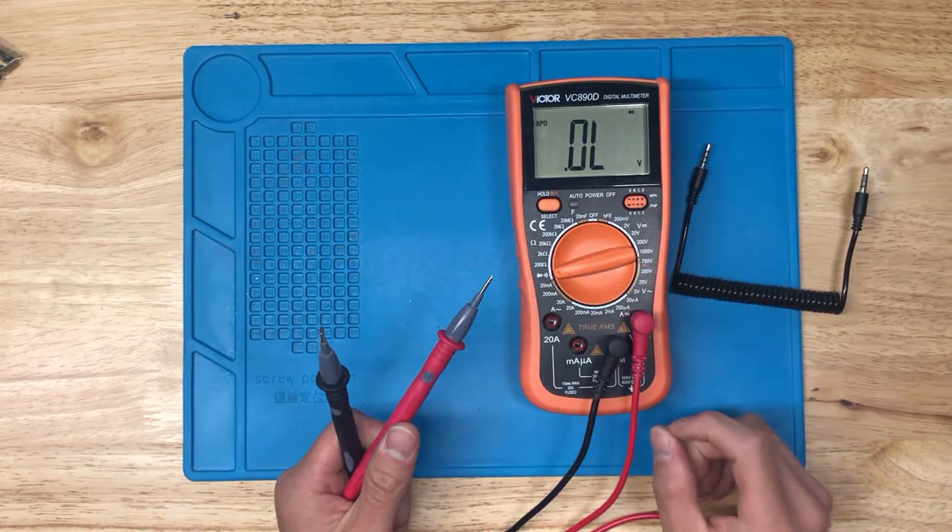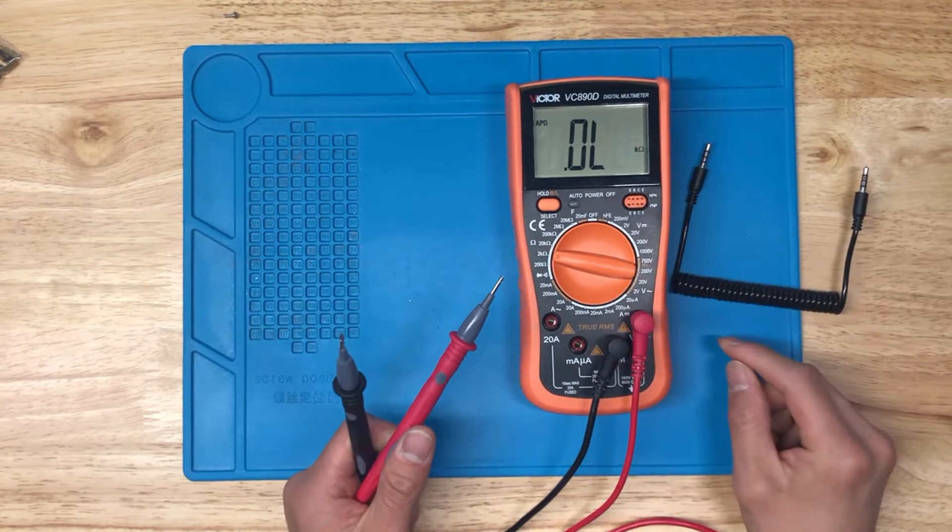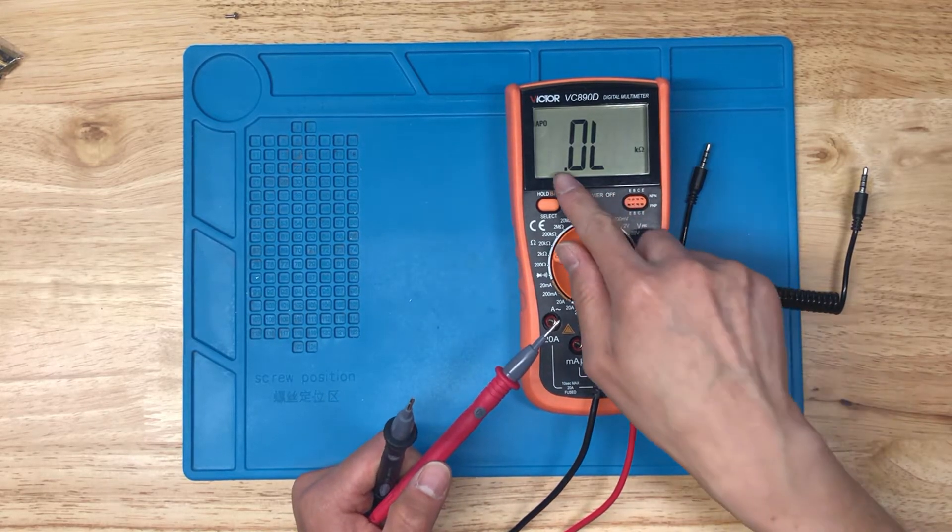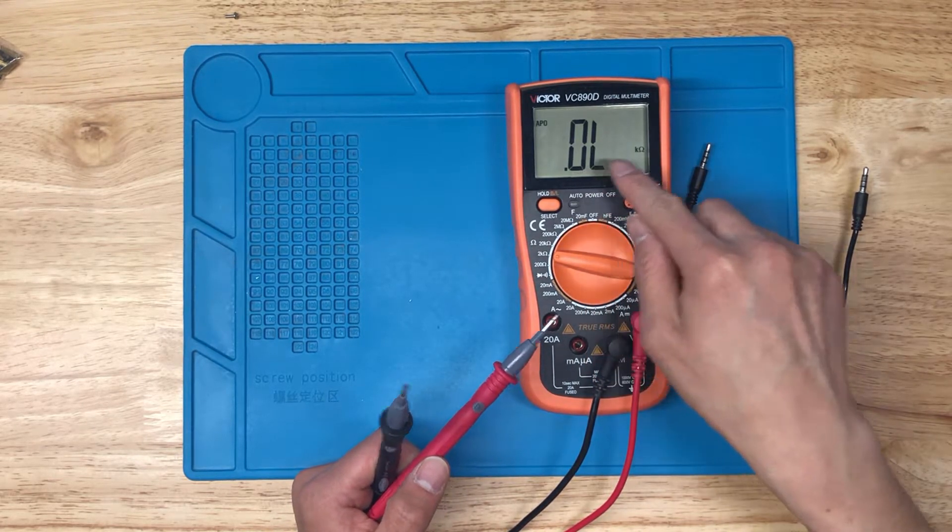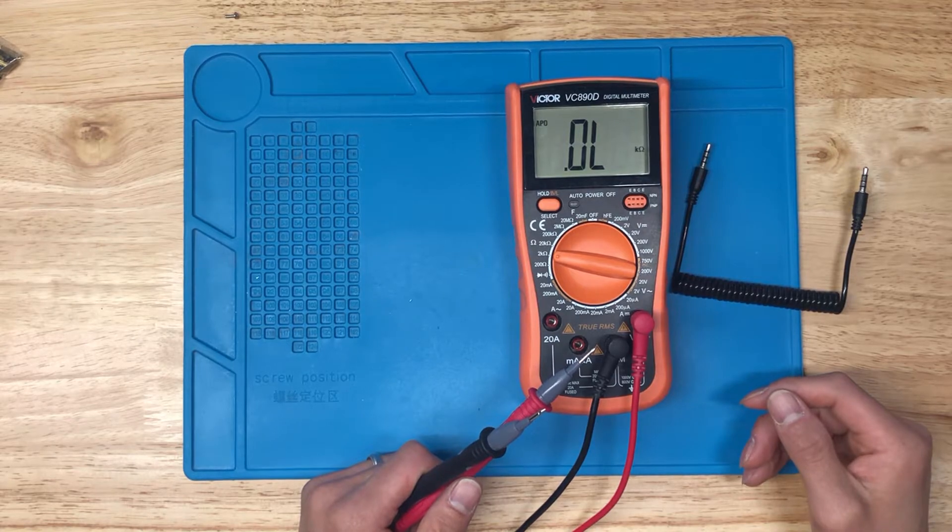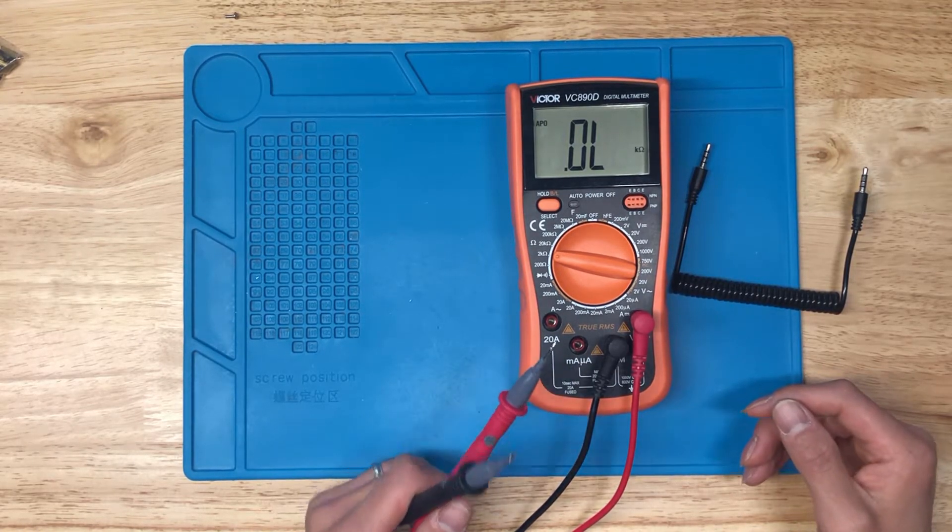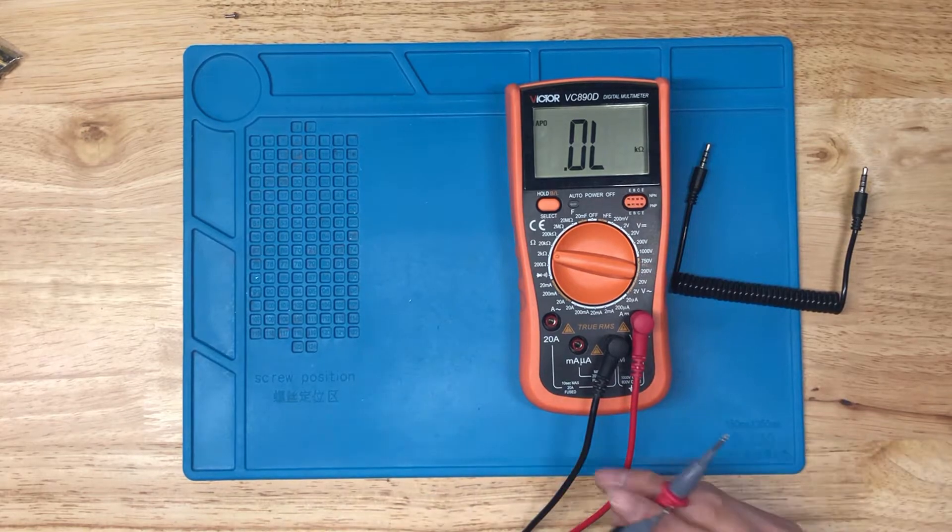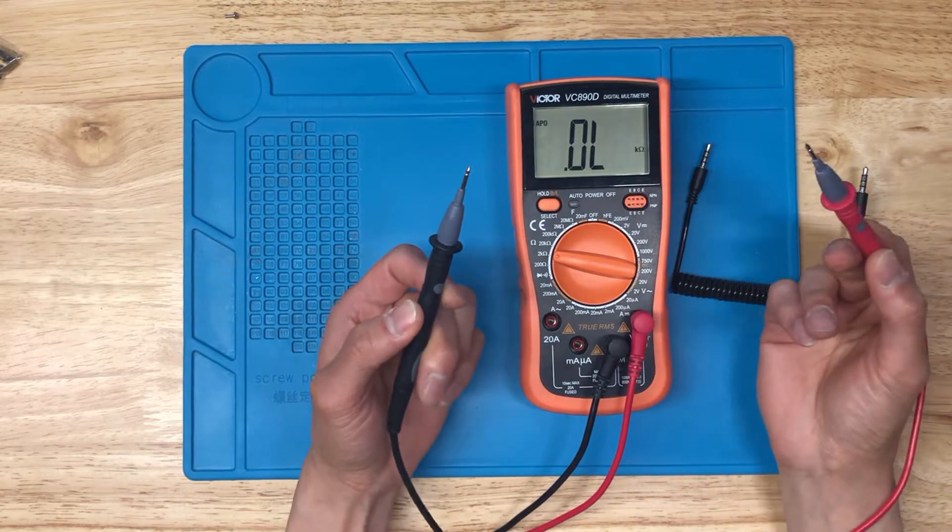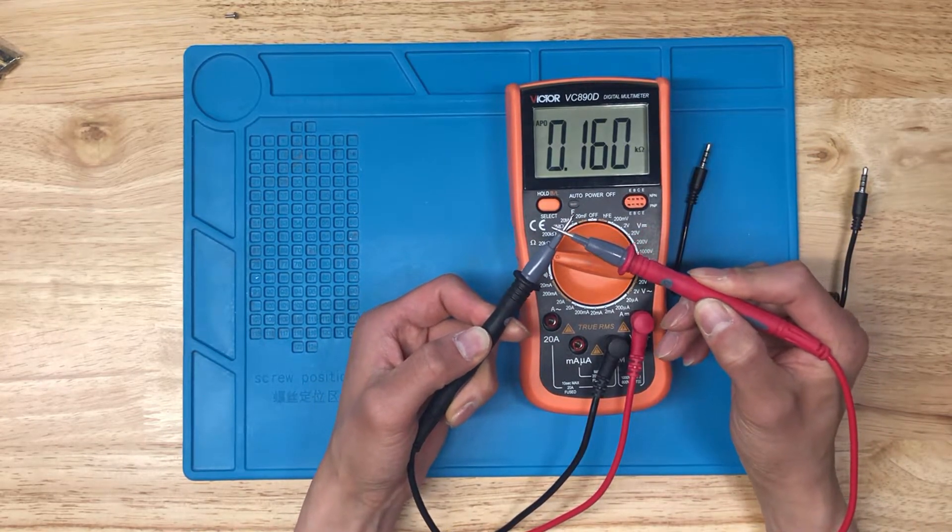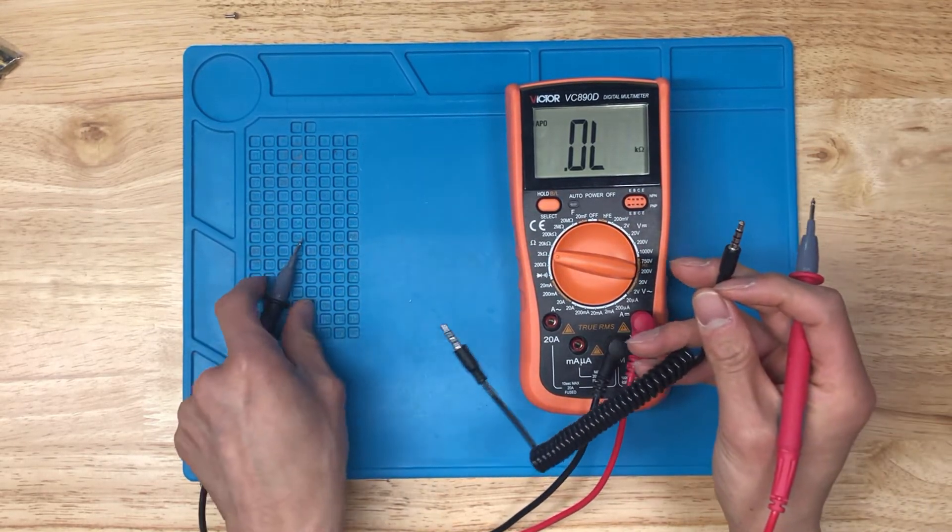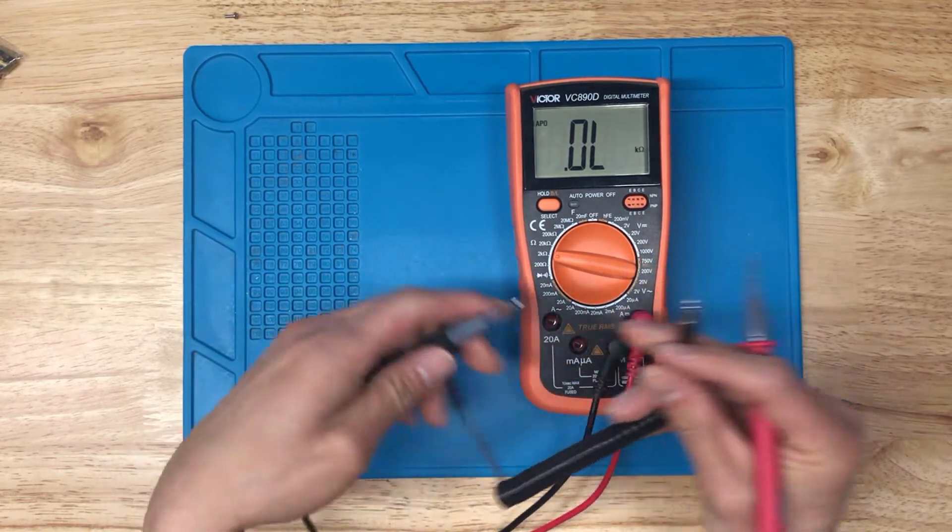If you don't have a beep mode or a diode mode, you can just set it to one of the resistance modes. Here I've set it to 2K. Right here on my multimeter it says .0L. Basically that's just equivalent to infinity for this particular model. So the first thing I want to check is I always want to check what happens when I connect these two together. So it reads at almost zero resistance, which we should expect.